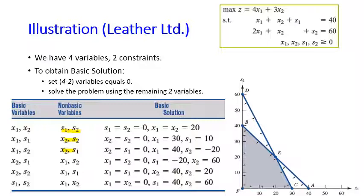This gives us six basic solutions in total. Looking at the graph, the first basic solution corresponds to point e, the second to point c, the third to point a, the fourth to point b with x1 = 0, x2 = 60. Note that the graph only plots x1 and x2, not the slack variables s1 and s2.